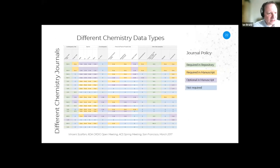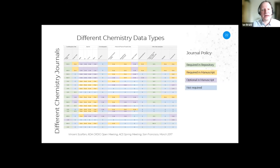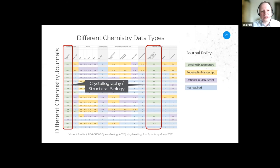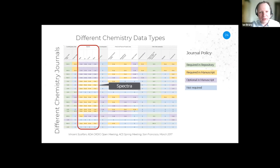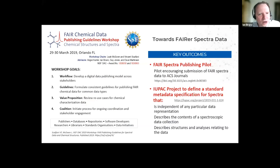This chart — don't worry about the detail, worry more about the colors — was a survey done by Vince Galfani at the University of Alabama. He looked at different chemistry journals, their policies regarding data, and different chemistry data types. The bits shown in green are where journal policies require a particular type of data to be deposited in a repository, and most specifically relate to crystallography and structural biology, as we might expect. The ones in yellow are where there were requirements to include data in the manuscript, and spectra came through here as something where publishers were expecting more than in other areas. This has sparked workshops to think about what we need to do to start moving publication of spectra data to an equivalent position to crystallography, where data sharing is more advanced.